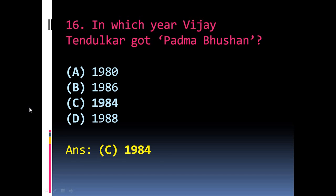Question 16: In which year did Vijay Tendulkar receive the Padma Bhushan? The options are A) 1980, B) 1986, C) 1984, D) 1988. The right answer is C) 1984.